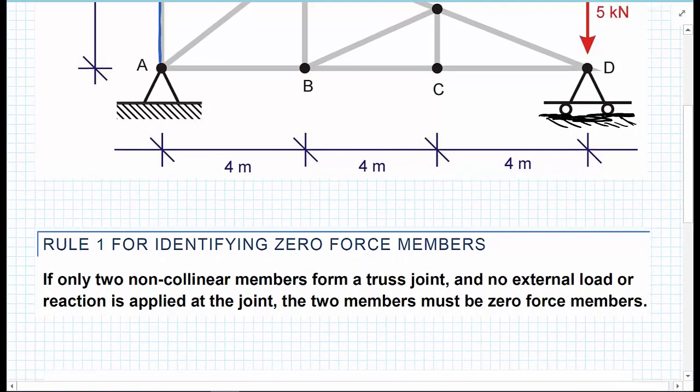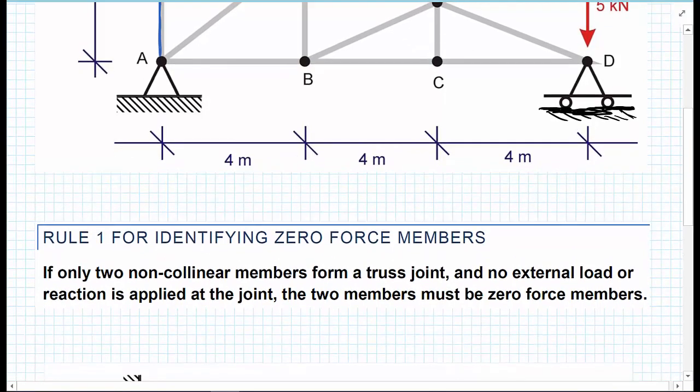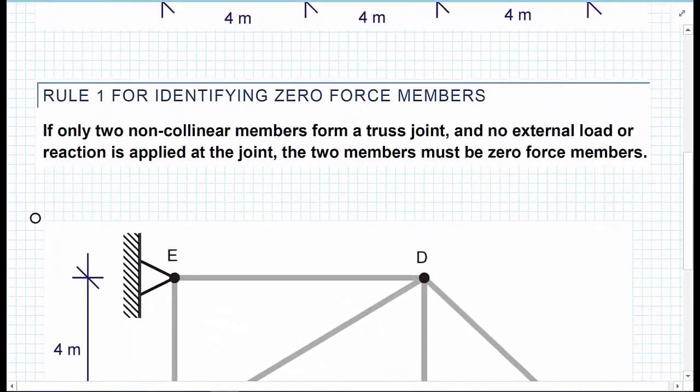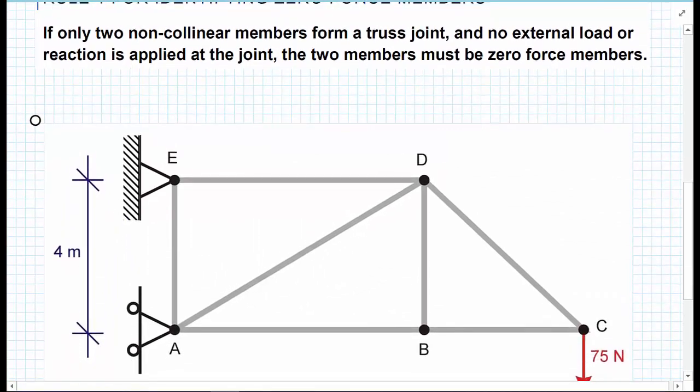We have another rule that we can look at as well. We've got one more zero force member on this truss. Looking at the truss, the second rule is: